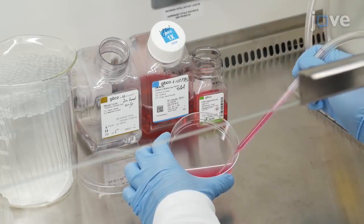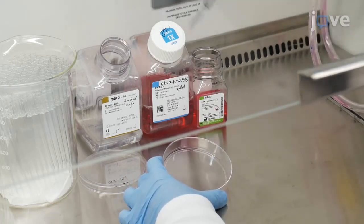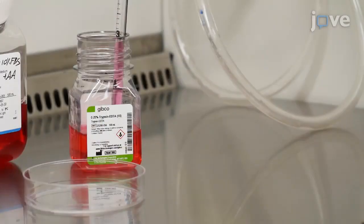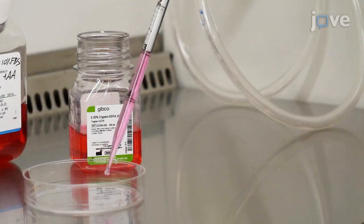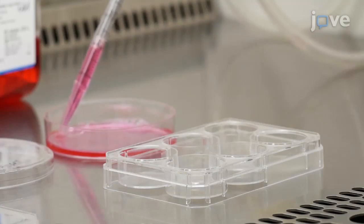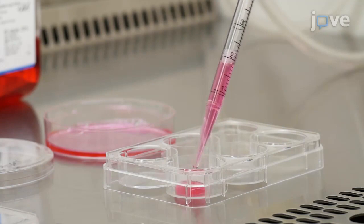To begin generating spheroids from cell lines, culture human bladder cancer cells under conventional adherent cell culture conditions. One day prior to the experiment, trypsinize the cells and distribute one million cells in three milliliters of cell culture media to each well of a six-well plate.